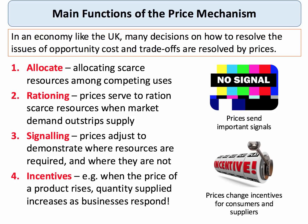One of the key functions of the price mechanism is to ration. Prices in the market serve to ration resources, particularly when demand outstrips supply. Prices also send important signals — they send information to producers about where resources are required and where they're not. And the price mechanism is an important vehicle for changing the incentive structures faced by both consumers and businesses.